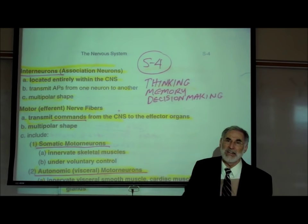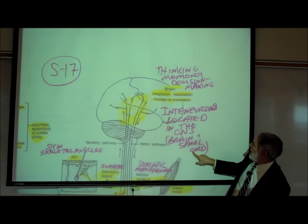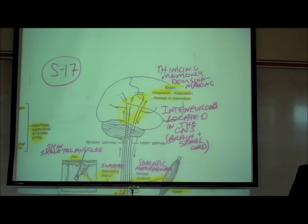Returning to the picture on S17: here are neurons located in the brain and in the spinal cord — these are called interneurons. What are interneurons used for? Thinking, memory, and decision making, among other things.